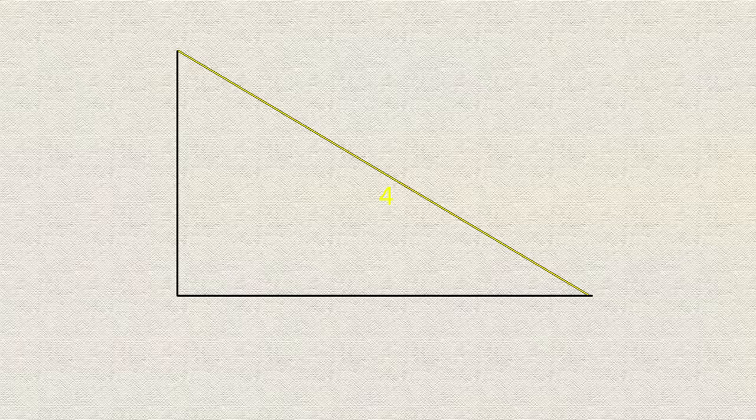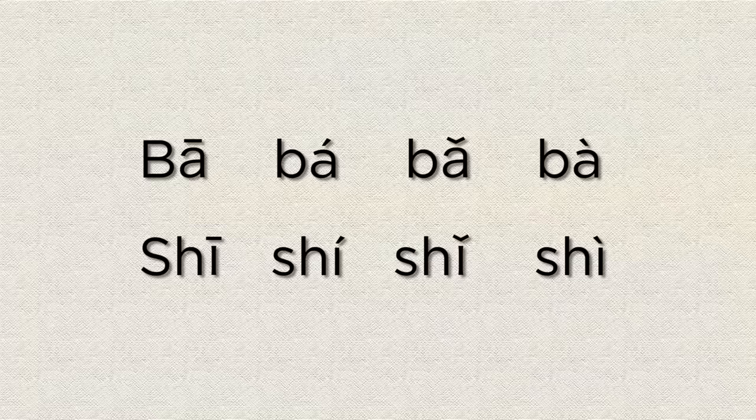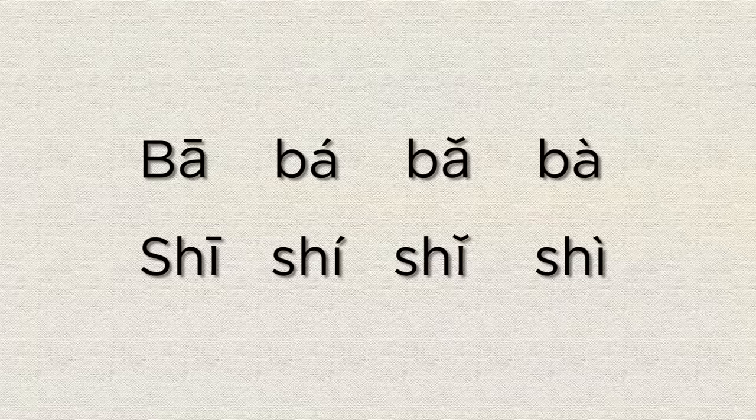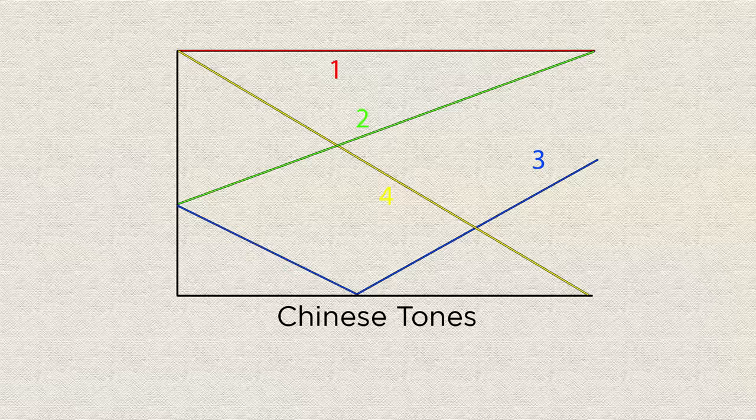The last tone, very easy, ma. It's just a short, sharp, it's called a falling tone, but you don't need to emphasize it like you're actually falling. It's just short and sharp, ma. We'll just demonstrate these four tones with another character. So ba, ba, ba, ba. And shi, shi, shi, shi.